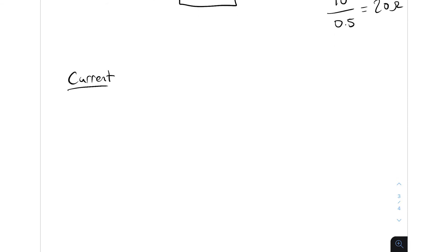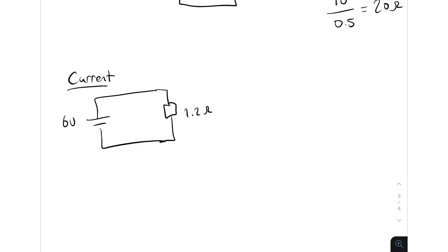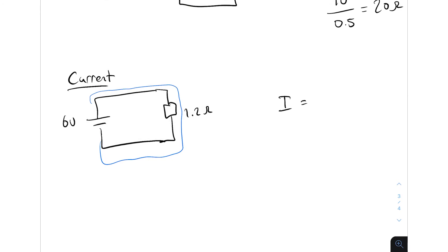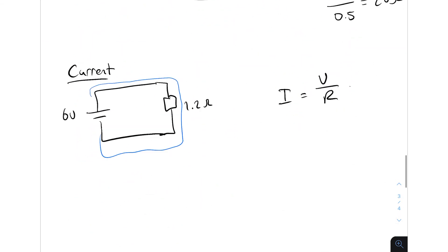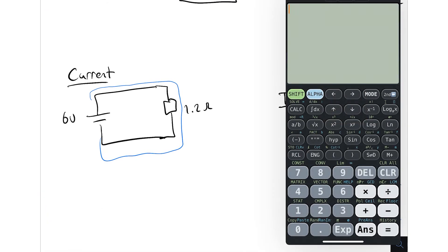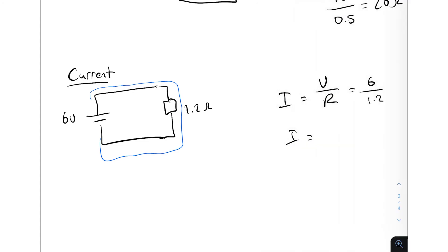Now let's do current. We've got a 6 volt battery and a resistor of 1.2 ohms. We want to know what current flows out of the battery through the resistor and back. We want to find I, so I equals V divided by R. That means we take 6 volts divided by 1.2, which equals 5. So we have 5 amps flowing through this circuit.